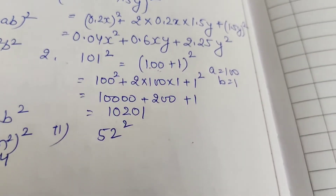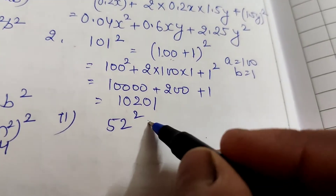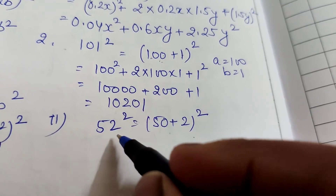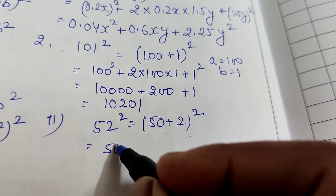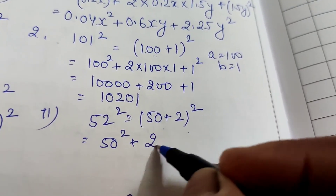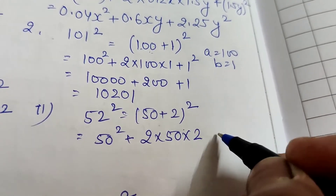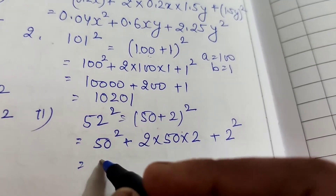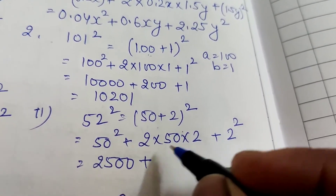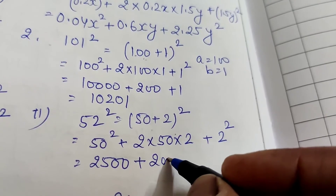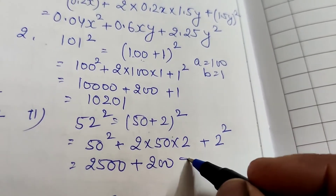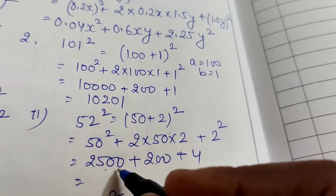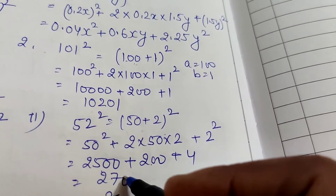The second one is 52². Write it as (50 + 2)². Square of the first: 50² = 2500. Two times the product: 2 × 50 × 2 = 200. Square of second: 2² = 4. Adding: 2500 + 200 + 4 = 2704.